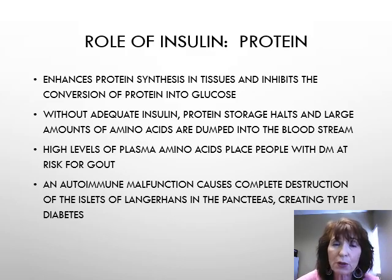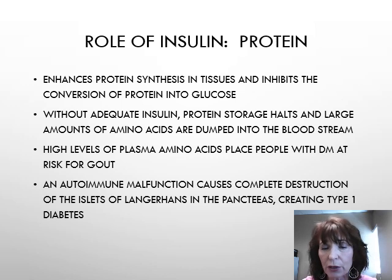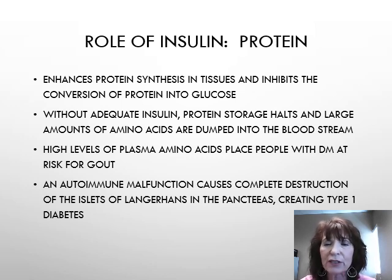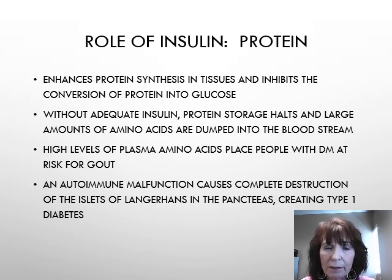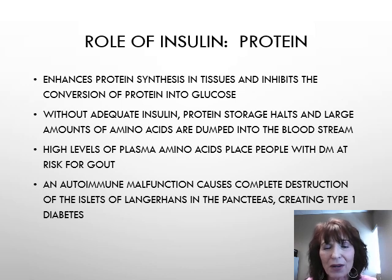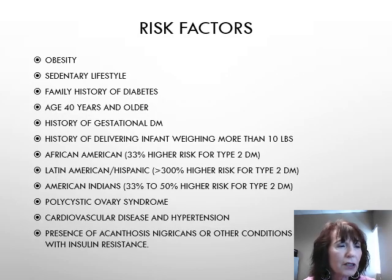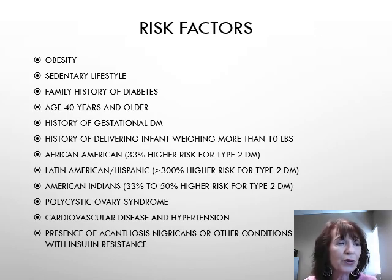Insulin enhances protein synthesis in tissues and inhibits conversion of protein into glucose. Without adequate insulin, protein storage halts and large amounts of amino acids are dumped into the bloodstream. High levels of plasma amino acids place people with diabetes at risk for gout, and changes in protein metabolism lead to extreme weakness and poor organ functioning. An autoimmune malfunction causes complete destruction of the islets of Langerhans in the pancreas, creating type 1 diabetes.